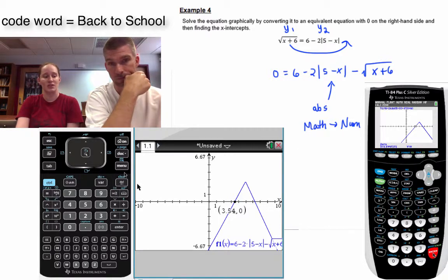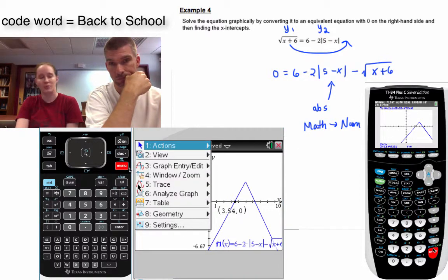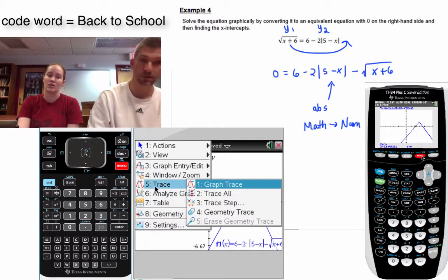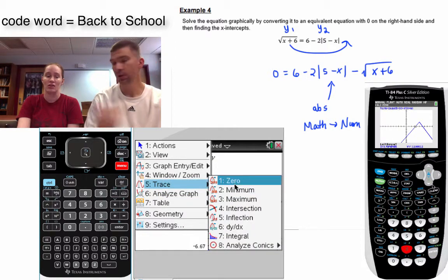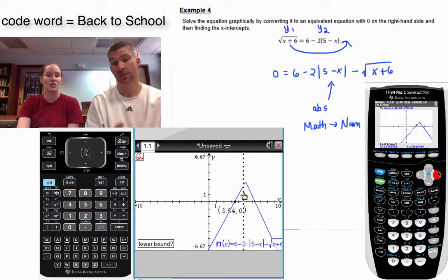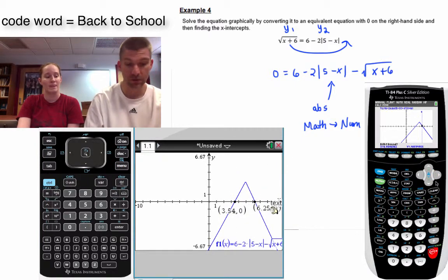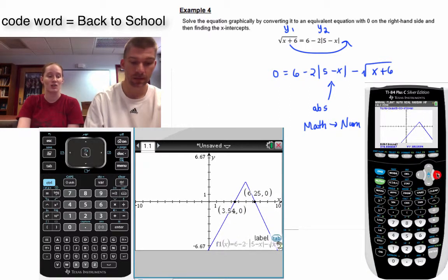And now the steps on figuring out where those x-intercepts are is to use the calculate menu. That's second trace on your old calculator. If you're looking for where you cross the x-axis, that's actually called a zero. Or if you have a really old calculator, it's called a root.